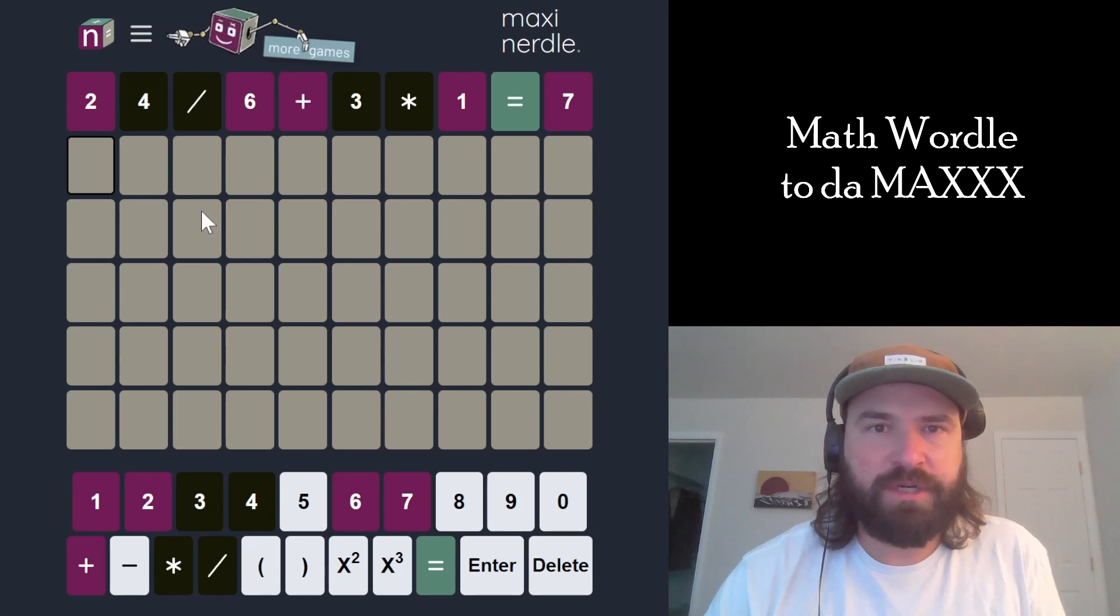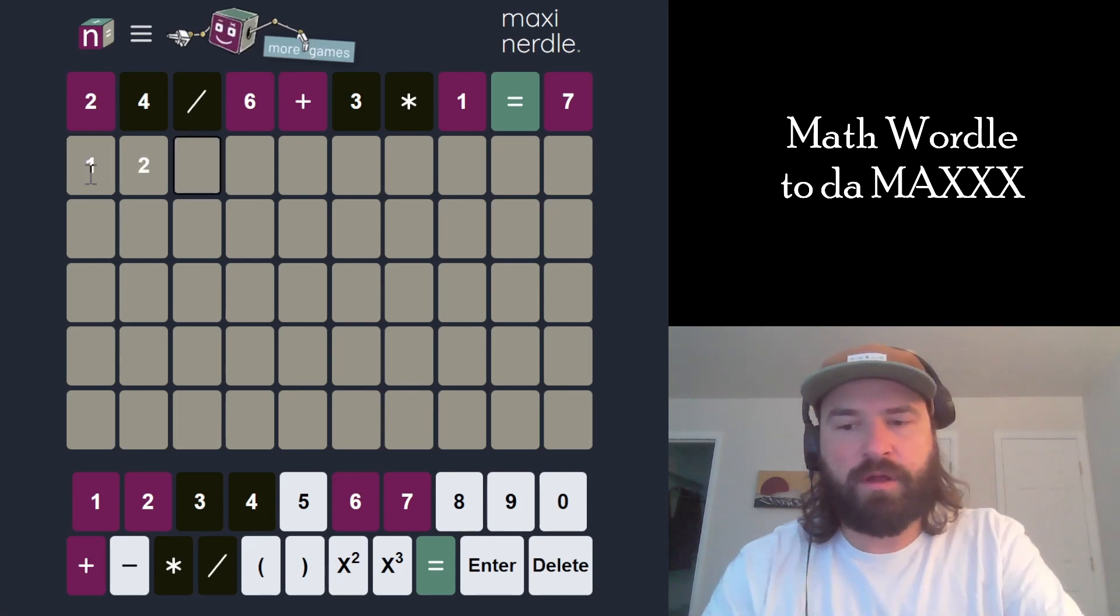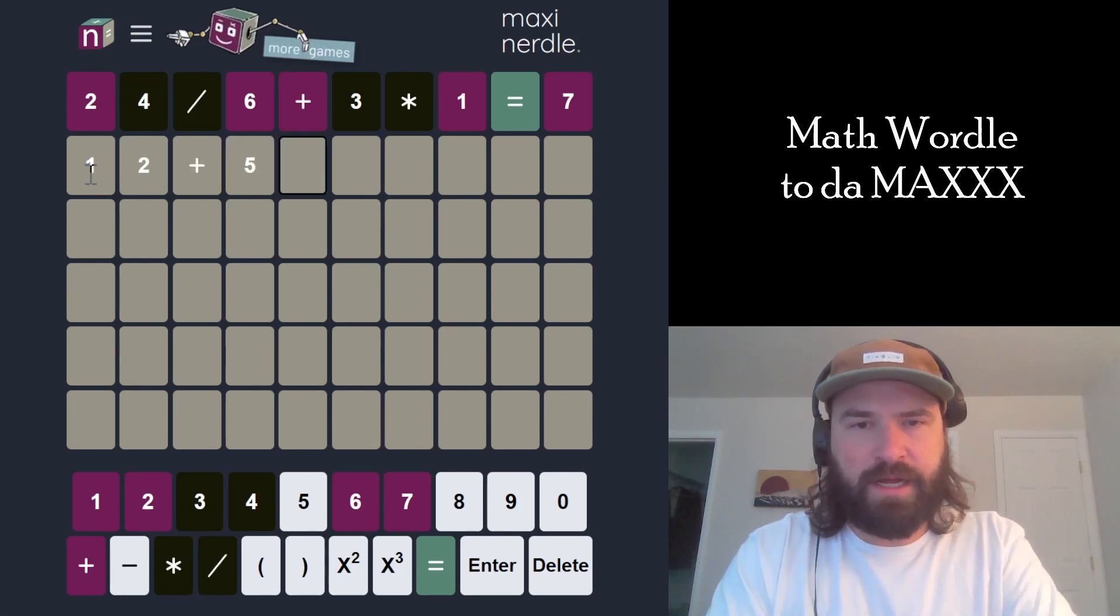We've got addition, probably going to have subtraction as well. Maybe I start with a 12 because we're going to need a double-digit somewhere. I do 12 plus 5 minus... It would be cool to do addition twice.